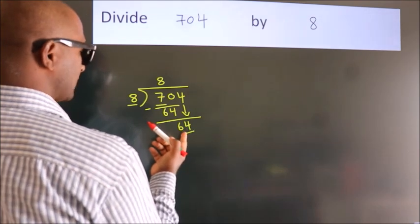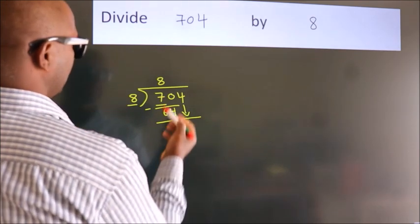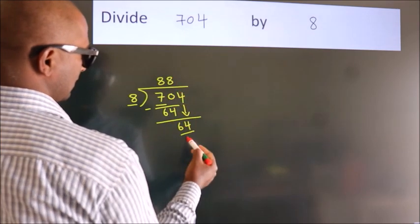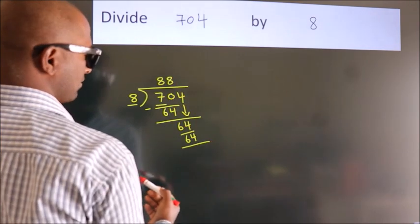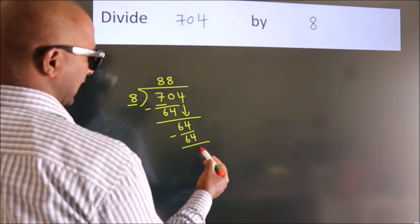When do we get 64 in the 8 table? 8 times 8 is 64. Now we subtract, we get 0.